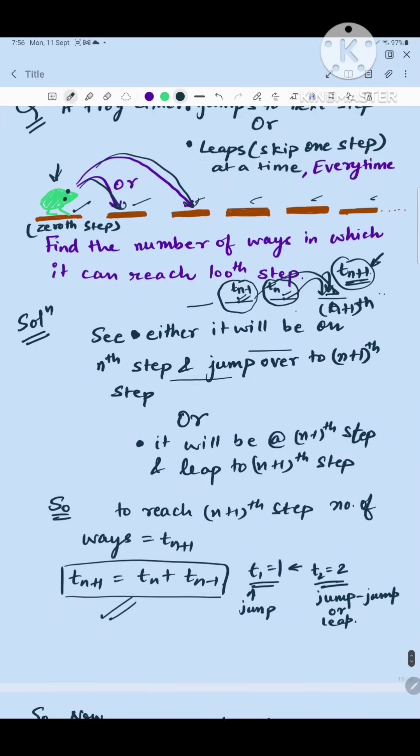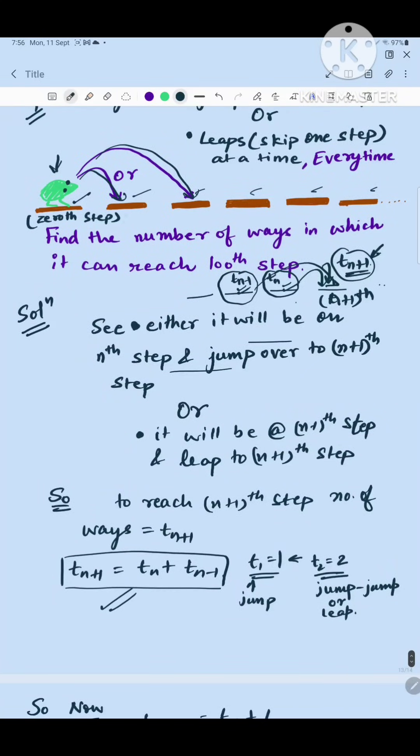And what we know is if this is 0th step and this is first step, to land on the first step there is only one way it will leap. So t_1 is 1 and what is t_2? To land on the second step there are two ways: it will jump and it will again jump, or it will leap from here to here. So t_2 is 2.